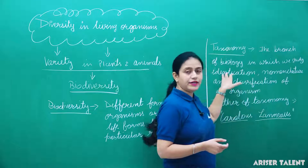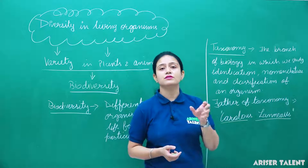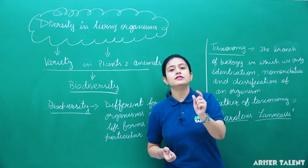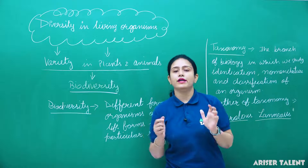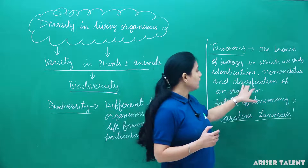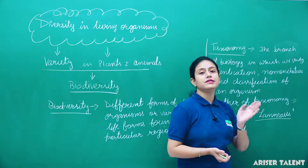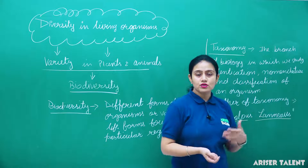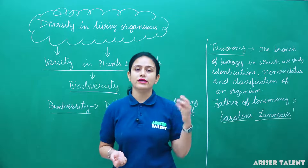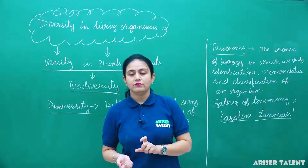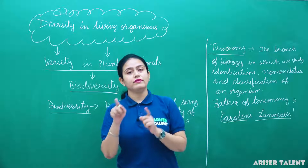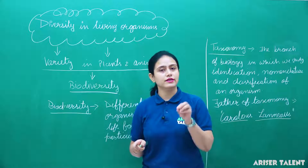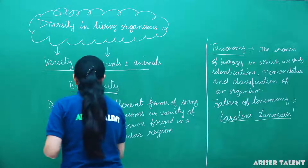Identification means an organism is first identified on the basis of different features. Nomenclature means that organism — whether it is a plant or animal — is given a particular name so that we can easily study about it. Then classification: on the basis of similarities, dissimilarities, and interrelationship, organisms are classified into different groups and subgroups.